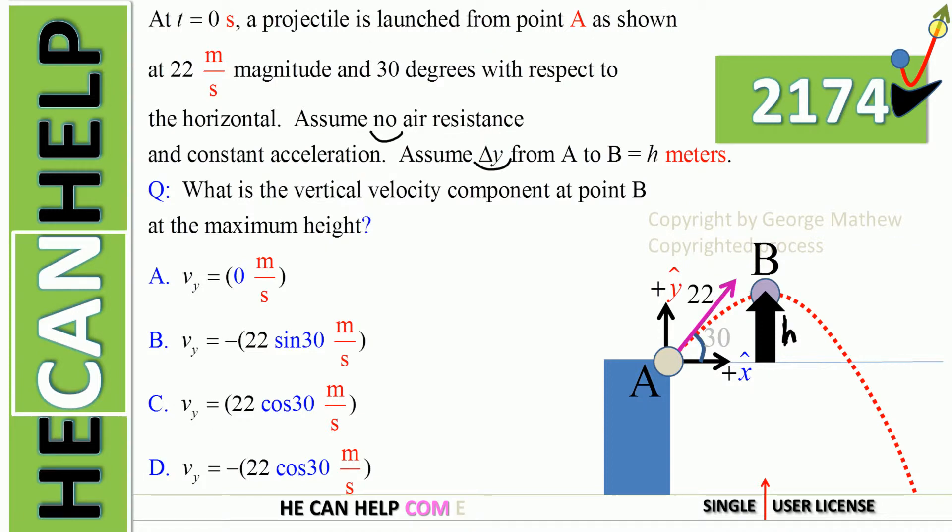Assume point B is at the maximum height. What is the vertical velocity component at point B at the maximum height? A, B, C or D?